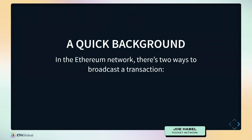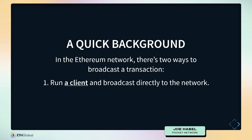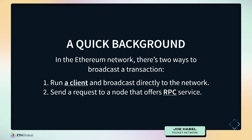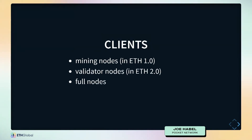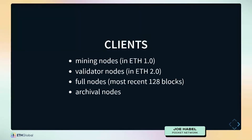In the Ethereum network, there are two ways to get your transaction out there. You can run a client and broadcast the transaction through the client, or you can send a request to a node that offers some form of RPC service. Examples of clients include mining nodes in ETH1, validator nodes in ETH2, full nodes — which store the most recent 128 blocks — and archival nodes, which store all blocks in the history of Ethereum.